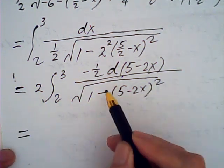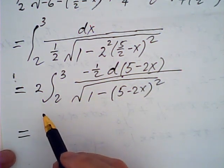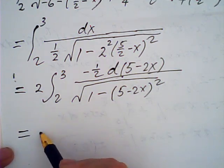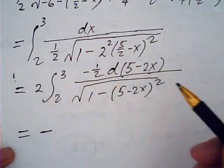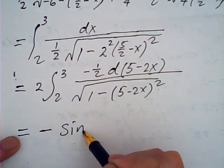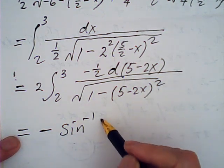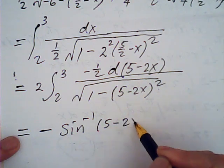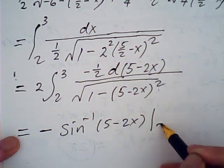Then I can use formula. This one cancels out - negative - actually this is the formula: arcsine of 5 minus 2x from 2 to 3.